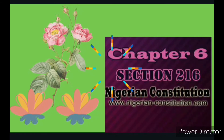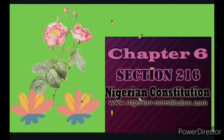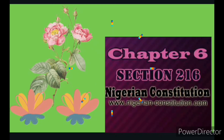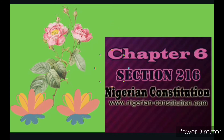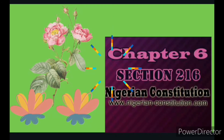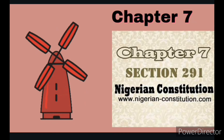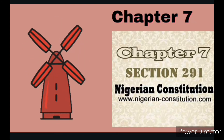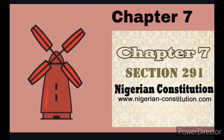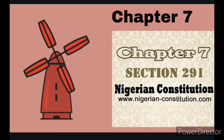Chapter six talks about how Nigerian citizens elect their leaders and how the leaders are supposed to rule the government. Chapter five also states who can enforce laws in Nigeria.